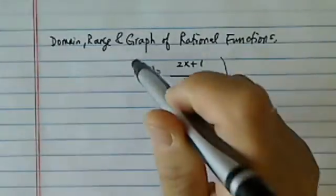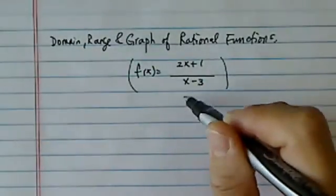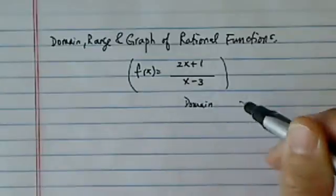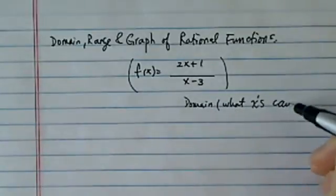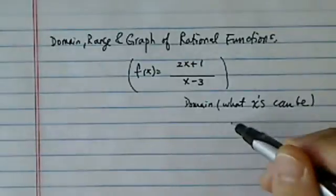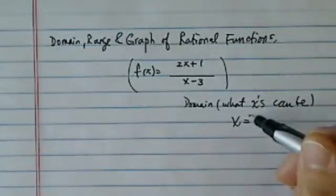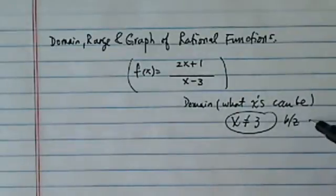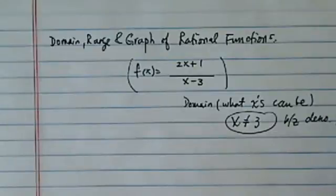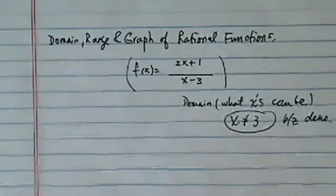This function is a really interesting one. First of all, domain is pretty easy. Domain is what x can be. Well, for our case, x can be anything except 3 because this will make the denominator 0. So that's a pretty easy one.